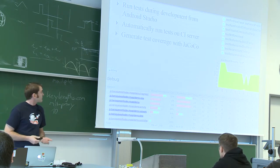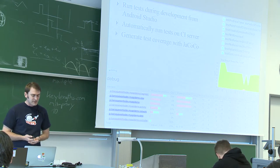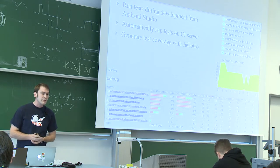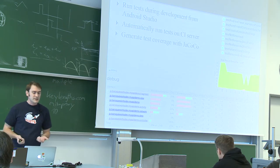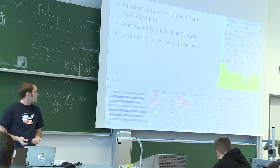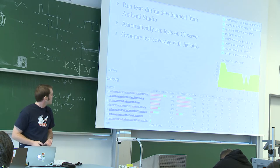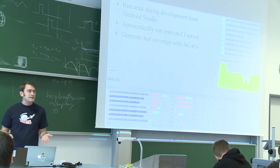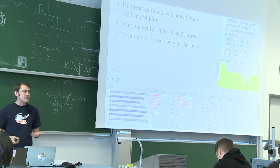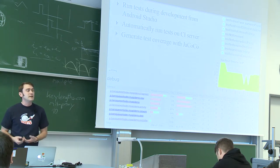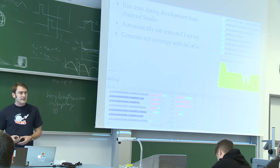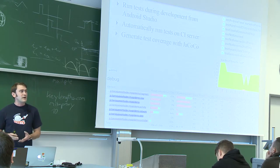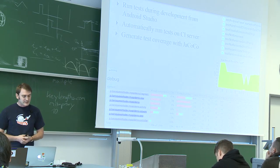The Android team has Jacoco integration for code coverage. You can do this on the build server and generate a statistic that says how much of your code is tested, which packages are completely untested — this gives you a feeling of where you stand with your tests.